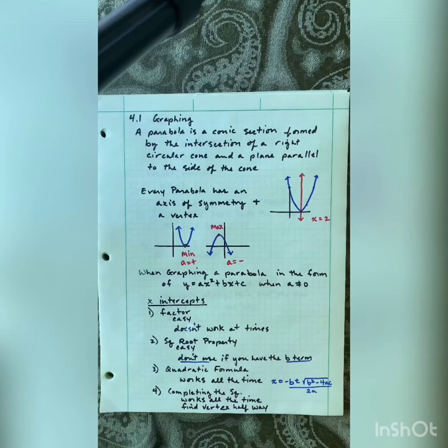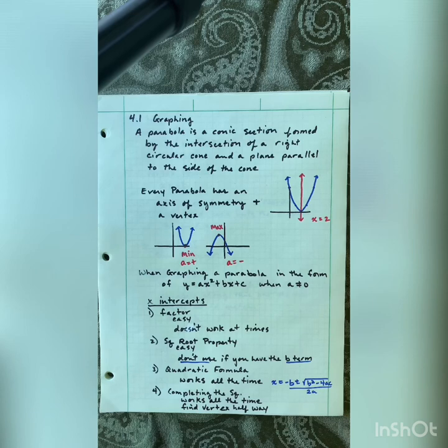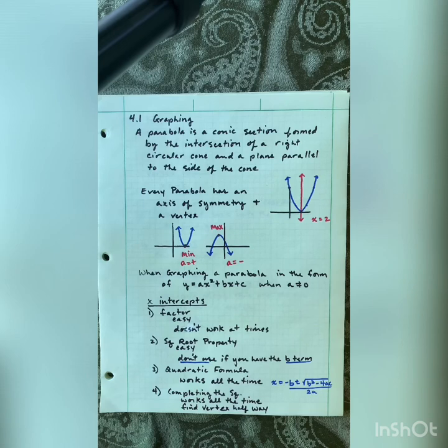When graphing a parabola in the form y equals ax squared plus bx plus c, where a cannot equal 0, I'm going to ask you to find certain things like the x-intercepts. We have four ways of finding those intercepts. The first way is to factor it, which is easy, but it doesn't work all the time. We saw back in chapter one that there were a few things that we couldn't factor — we had to write down prime. I always look for factoring first because it is the easiest way to do it.